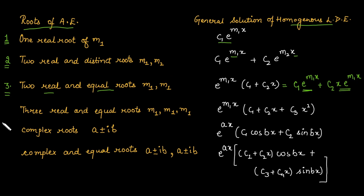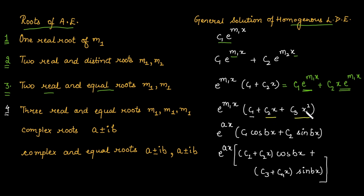The fourth case is when three roots are all equal. The solution is e^(m1·x) multiplied by (c1 + c2·x + c3·x²). If there is a fourth equal root, we add c4·x³ to ensure linear independence of all solutions.